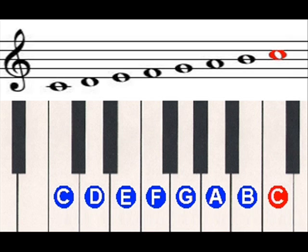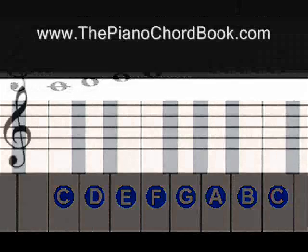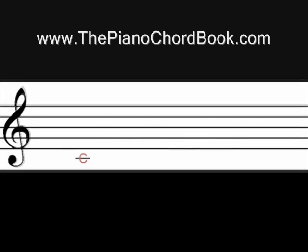The middle line is B and the space above that is C. So you can see how the notes on the keyboard line up with the notes on the staff, but let's get rid of the keyboard and let's look specifically at the staff now and review.